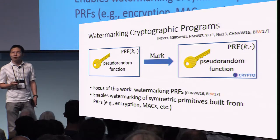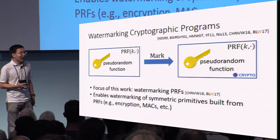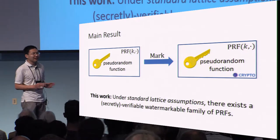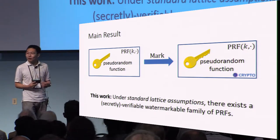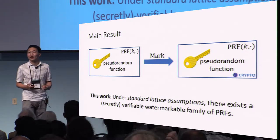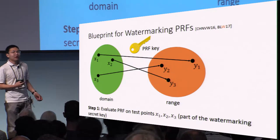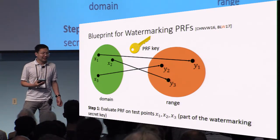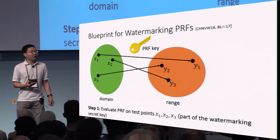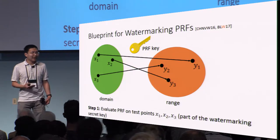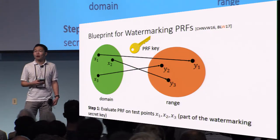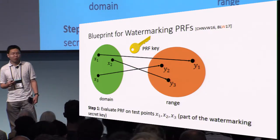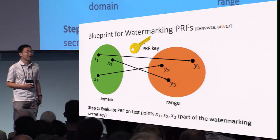The main result in this work is that we show under standard lattice assumptions there exists a watermarkable family of PRFs. I will start by giving you a blueprint of how our construction proceeds. This roughly follows the schema outlined in the work of Cohen et al., who first introduced strong security notions for watermarking cryptographic functionalities.